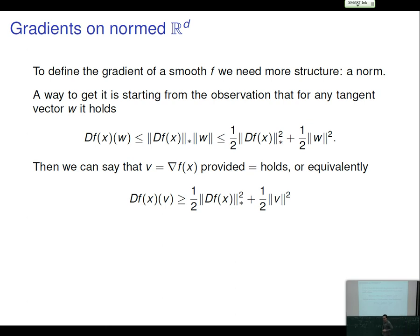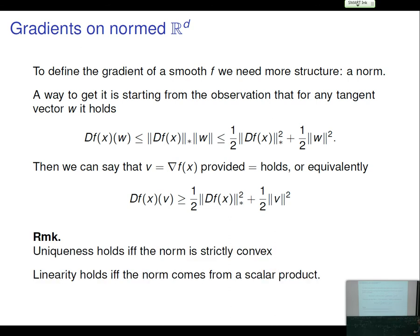The gradient is in general not unique — it is unique if and only if the norm is strictly convex — and even if unique, it is linear if and only if the norm comes from a scalar product. This is why calculus on Finsler spaces is harder: for two smooth functions f and g, the gradient of f+g is not in general the sum of their gradients, even though at the level of differentials it is.